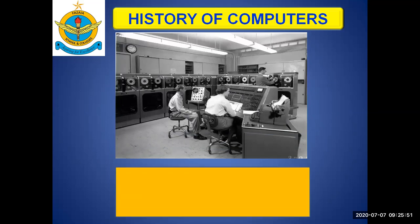Next we have UNIVAC, also known as the Universal Automatic Computer. It was developed in 1951 and it was the first supercomputer ever.